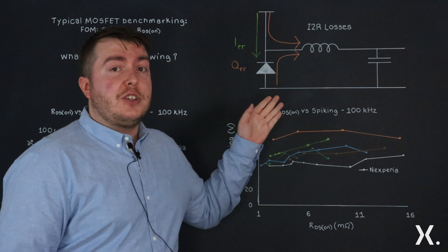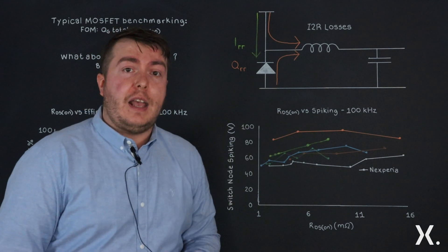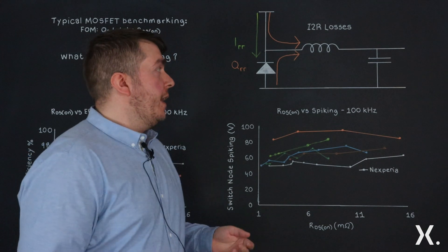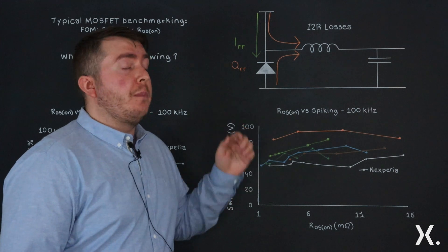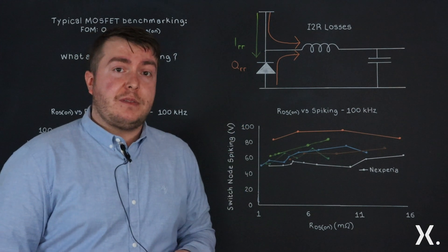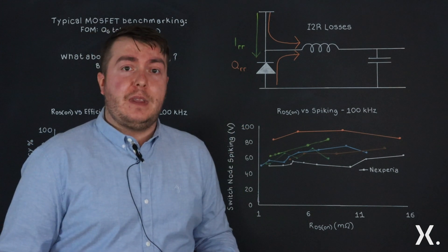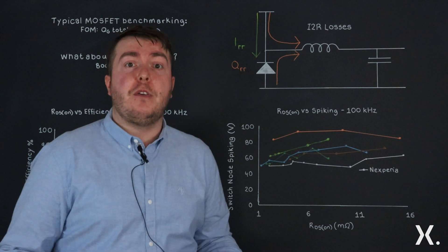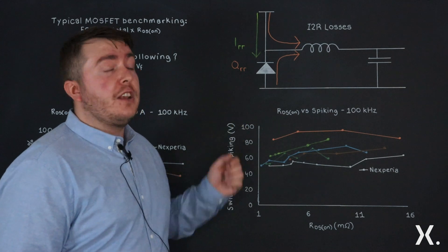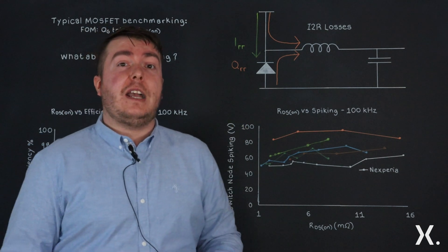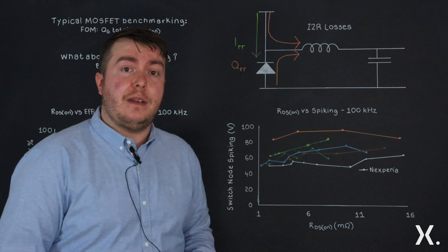Now the stored charge within the inductor of this circuit has to go somewhere when both MOSFETs are off. The way that flows is through the body diode of the low side MOSFET, storing charge naturally. This charge has to be removed when the high side switch is on.